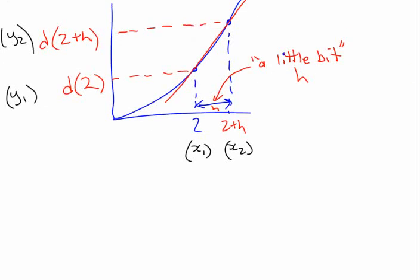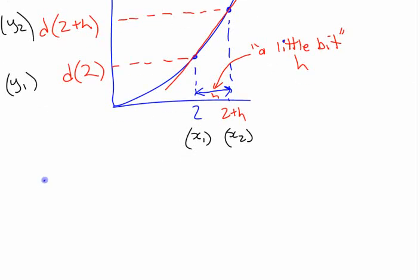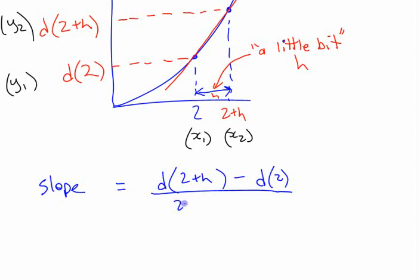If we're going to write an expression for the slope between those two points is what? How do I write the slope between those two points? Y2 minus y1 over x2 minus x1, right? So how do I write that? What do I got? I have d of, which one comes first? 2 plus h minus d of 2. On the bottom I have, what do I have? 2 plus h minus 2.